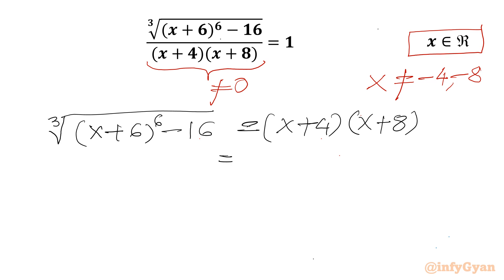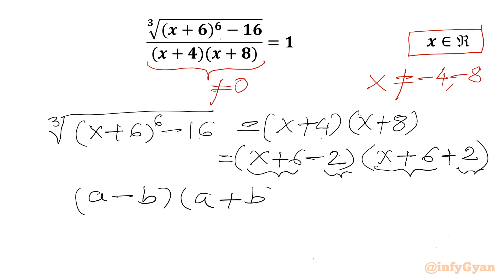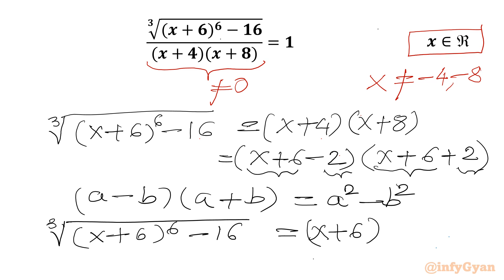Now I can write x plus 4 as (x plus 6) minus 2, and x plus 8 as (x plus 6) plus 2. You can see if I consider these as a and b respectively, then we have (a minus b)(a plus b) — that is the difference of two squares identity, giving a squared minus b squared. So I will write our equation as: cube root of (x plus 6) to the power 6, minus 16, equal to (x plus 6) squared minus 4.